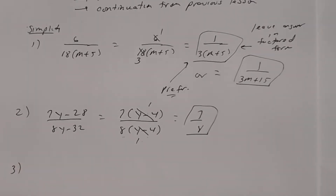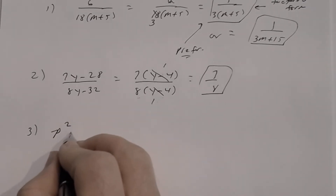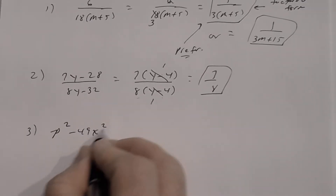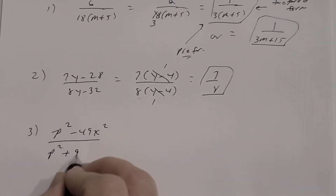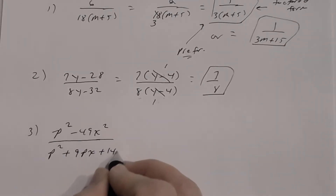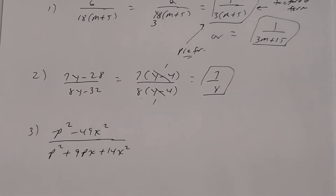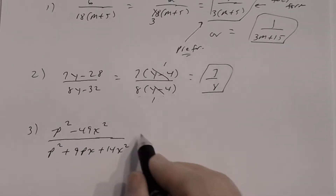Number three: we have (p² − 49x²) divided by (p² + 9px + 14x²). The numerator looks like the difference of two squares, and it is, so I can factor it.